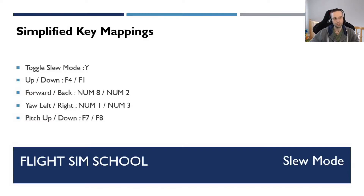Once you're in position, you just hit the Y key and you're going to exit slew mode. Let's pop into the simulator and see what that looks like in the game.